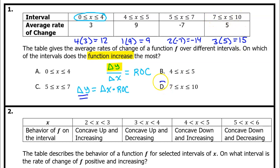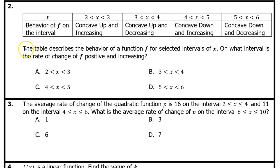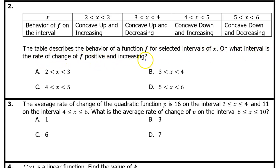That's why the answer to number 1 would be D. Number 2. The table describes the behavior of a function f for selected intervals of x. On what interval is the rate of change of f positive and increasing?